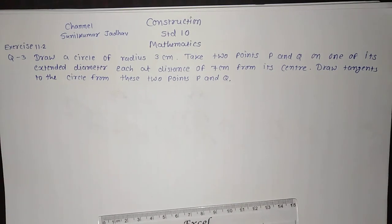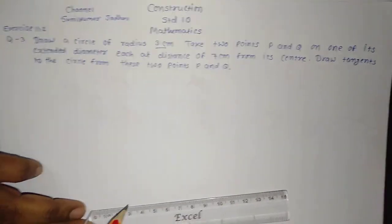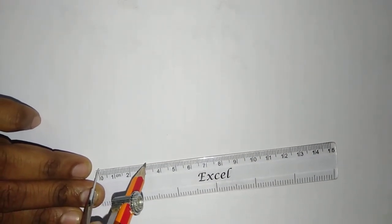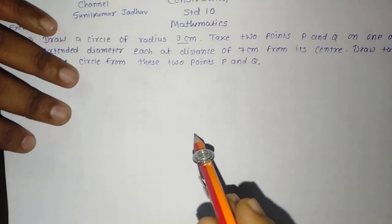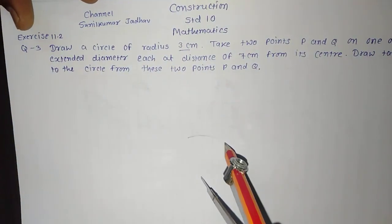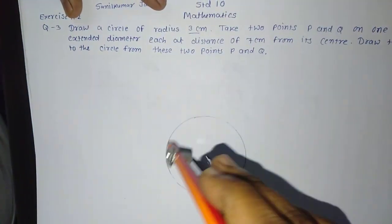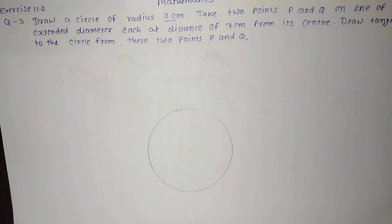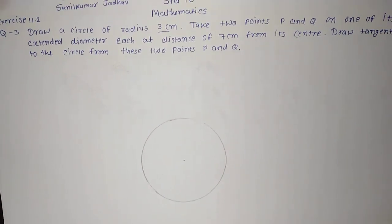Let us begin. First of all, draw the circle of radius 3 centimeter. We will draw the circle with the given radius — let us measure it. You can see it is 3 centimeter. Be careful while drawing any construction: the pencil should run only once. So this is the circle with 3 centimeter radius.